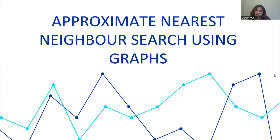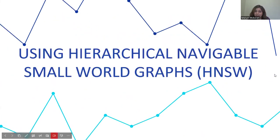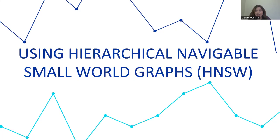Hi everyone. My name is Mahavakaram. I'm going to be talking about an interesting graphical approach to the approximate nearest neighbor search. Specifically, I'm going to be talking about hierarchical navigable small world graphs, referencing the paper 'Efficient and Robust Approximate Nearest Neighbor Search using Hierarchical Navigable Small World Graphs.' So let's get started.